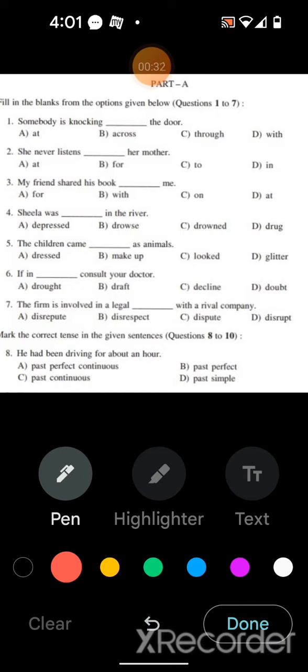I am going to explain you why that option is correct. Sentence number one: somebody is knocking at the door. Students, sentences one, two, three are the examples of the prepositional phrases.